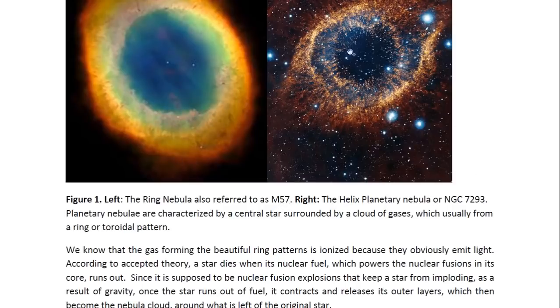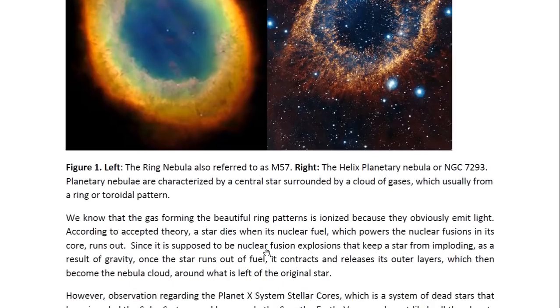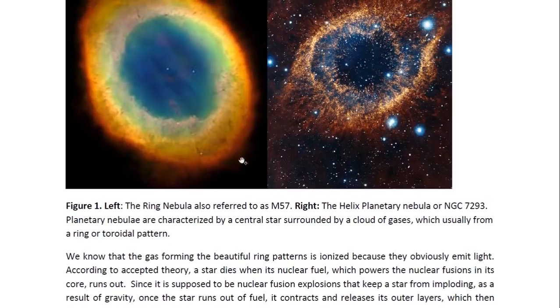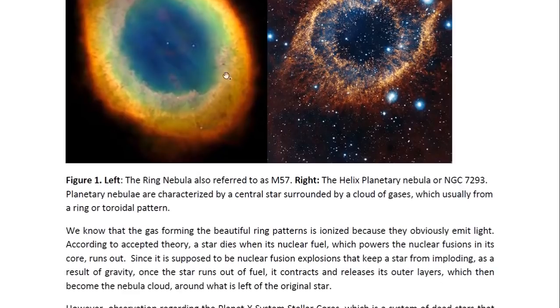And this one is called Helix Planetary Nebula or NGC7293. So they are characterized by a star at the center, and then a cloud of gases which form in this ring or toroidal pattern, although not always. Sometimes we have some other patterns, but it always is centered on the star.